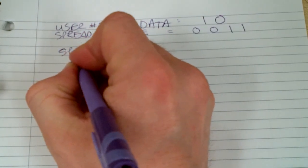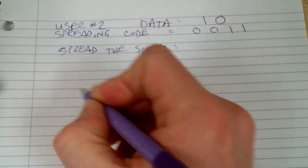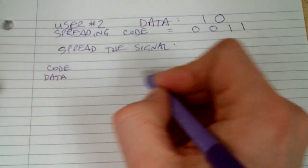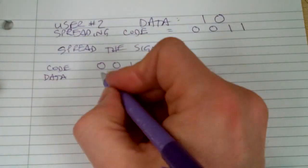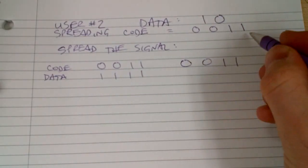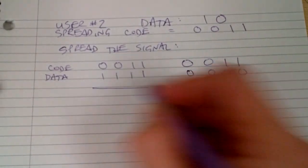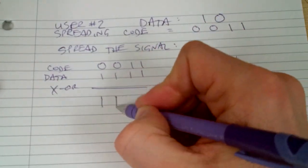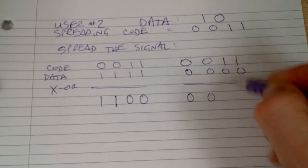So we spread this signal. We'll start with the code and data. The code is zero, zero, one, one, and the first bit is one. We put the data like that, first bit is one. Then we apply the same code again; the second bit is zero. And then we do the XOR — different is one, same is zero.